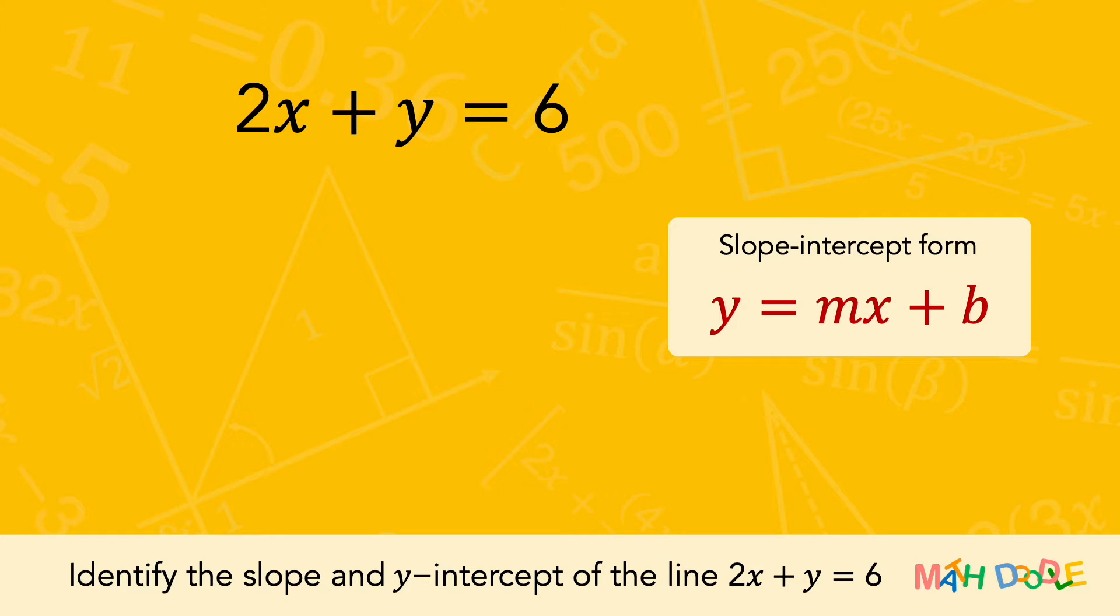In the slope-intercept form, the left side of the equation has only y, and the right side of the equation has the term with x, as well as the term without any variable.